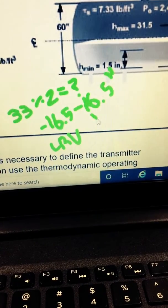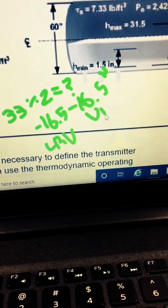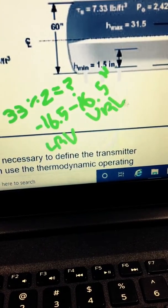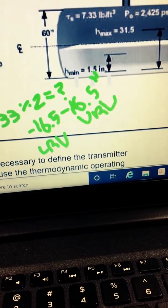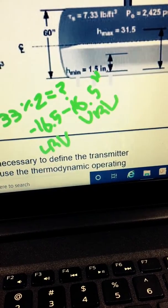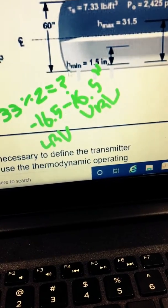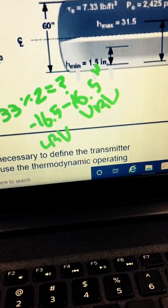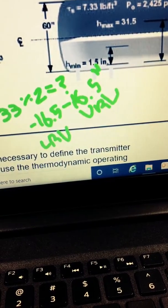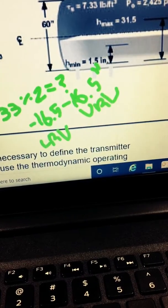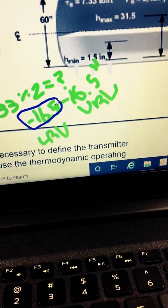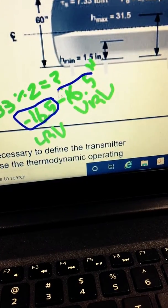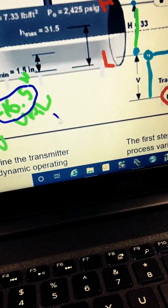So, now we're going to talk about our lower range value and our upper range value, otherwise known as your URV. Now, in this instance, this is going to be your control settings. So, you're basically going to set your controls up to receive the 4 to 20 milliamp from the transmitter as a negative 16 and a half inch lower range value and a 16 and a half inch upper range value.